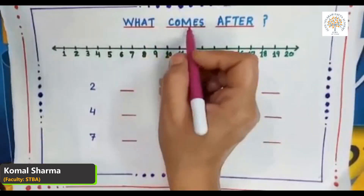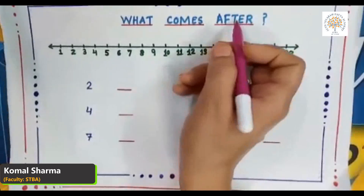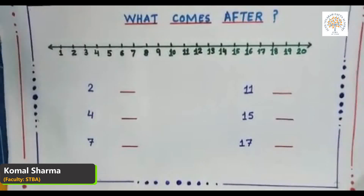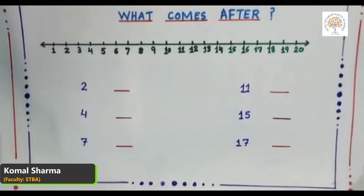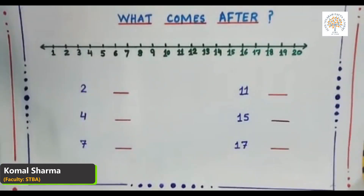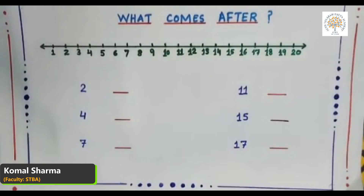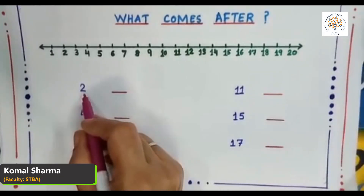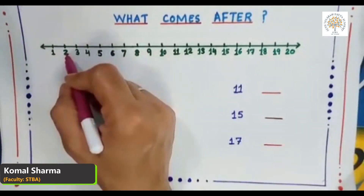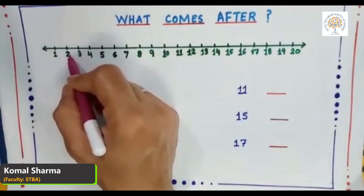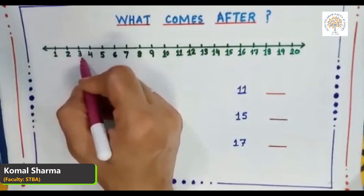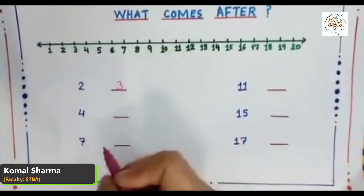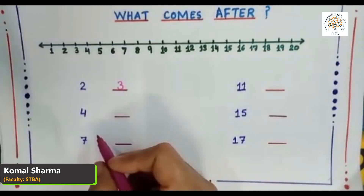First we will revise 'what comes after.' After means one more, or one greater than the given number when we count in the forward direction. The next number of the given number is 'after.' So students, which number is this? Look at number two on the number line — what comes after number two? Yes, it is number three.